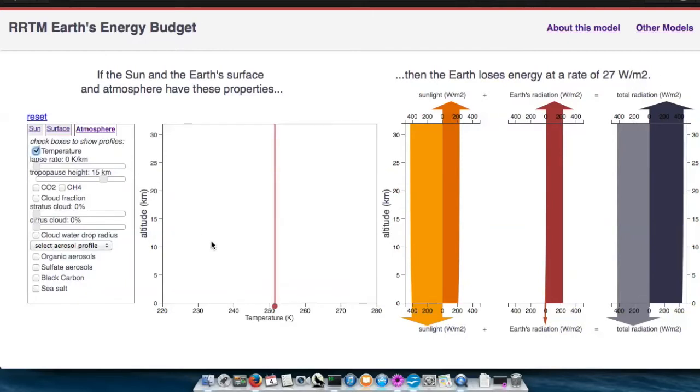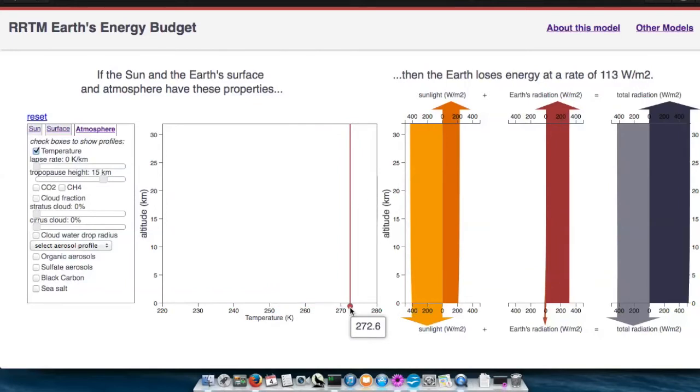You can see that the default is an atmosphere with uniform vertical temperature. You can drag the circle at the bottom of the graph to move the temperature profile around.